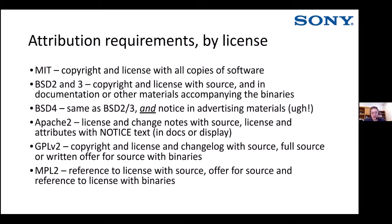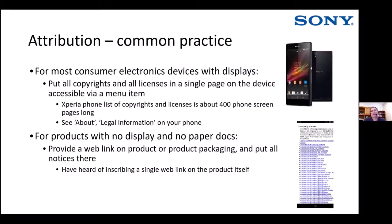To simplify things, most companies will gather everything — the licenses, the attributions, the copyrights — and put it on a single page in the device, accessible by a menu item. If you look on an Xperia phone under 'About' and 'Legal Information', you'll see a huge long screen where the scroll bar is only one or two pixels big. All this information is included with the product now.